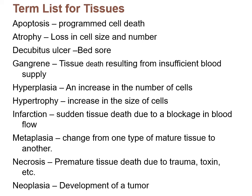Here are some tissue-related terms. Apoptosis is programmed cell death. Atrophy is loss in cell size and number. A decubitus ulcer is another name for a bed sore. Gangrene is tissue death resulting from insufficient blood supply. Hyperplasia is an increase in the number of cells — don't confuse this with hypertrophy, which is an increase in cell size. An infarction is sudden tissue death due to a blood vessel blockage. Metaplasia is a change from one mature tissue type to another. Necrosis is tissue death due to trauma or toxins. Neoplasia is the development of a tumor.